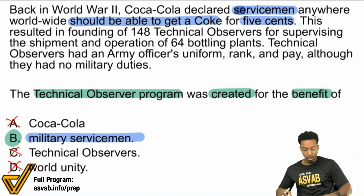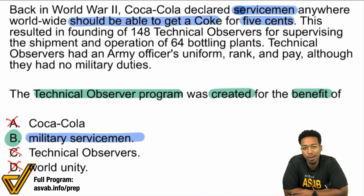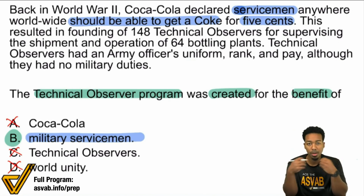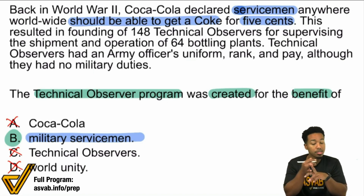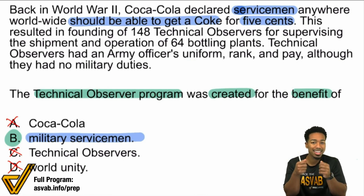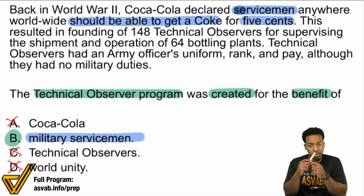Even though this was made during a war — World War II, to be exact. I really want to touch on this because it's so important for paragraph comprehension: remember that it's about what the passage supports, not about what you personally know to be true. Yes, Coca-Cola did benefit from this. Yes, military servicemen benefited. Technical Observers — the creation of those jobs, yeah, benefits. World Unity — it helped in a way, historically. But again, what the passage says — or what the question itself asks — is: the program was created for whom? Servicemen. For them to get Coca-Colas for five cents. And there it is.